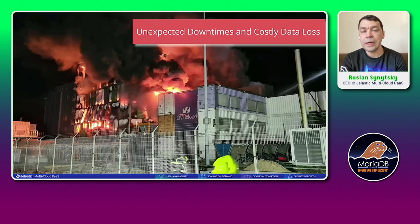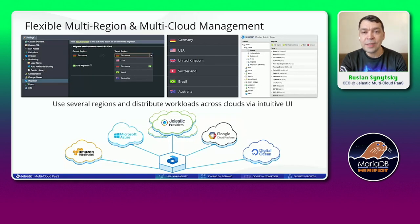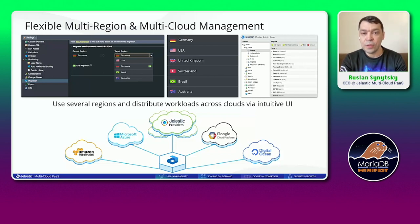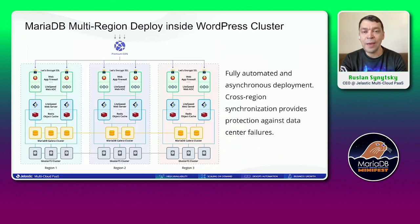To help customers be more protected, we offer and recommend multi-region and multi-cloud deployments. It's not easy to configure clusters in different regions, but Jelastic offers simplicity to deploy into different regions and different clouds, managing everything with the same API. We are working on advanced automation packages that can deploy clusters into different regions and configure synchronization between these regions.